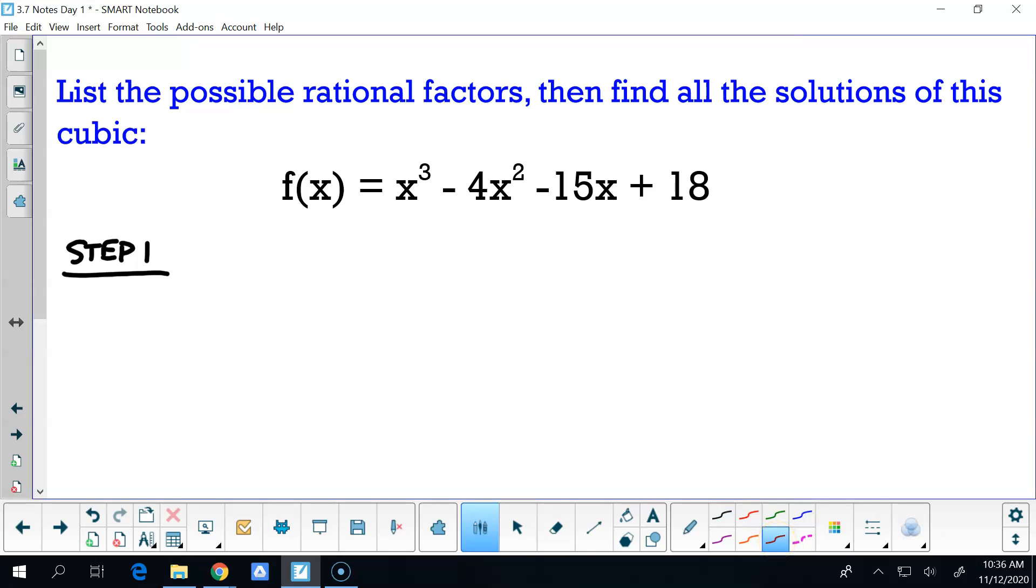Step one is finding my list. Because my leading coefficient is one, the list is just the factors of my constant term. So in this case it would be one, two, three, six, nine, and 18. Step two, you've got to try and find one. Anybody find one? One, two, sometimes we get lucky and the first one you try is the first one that works.